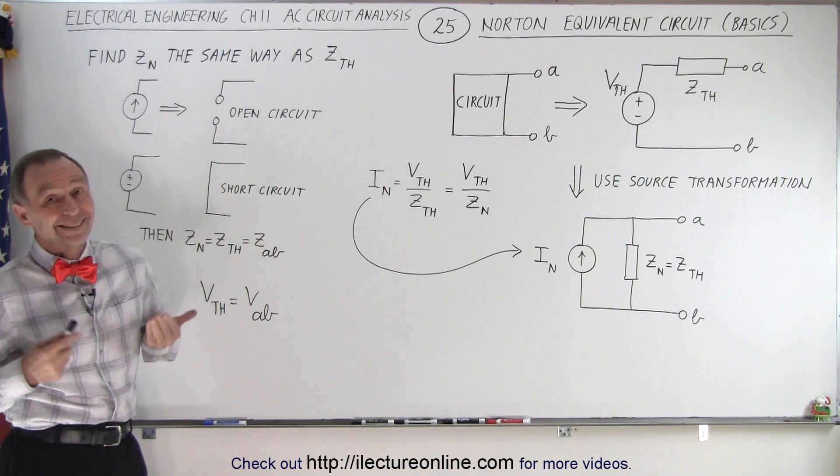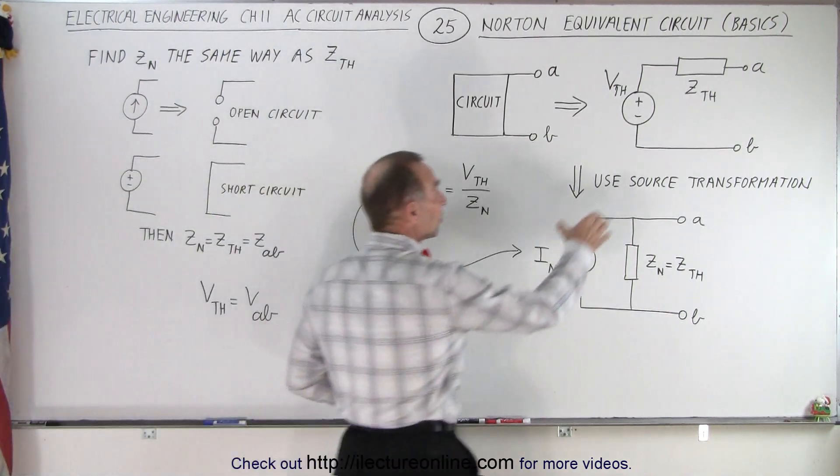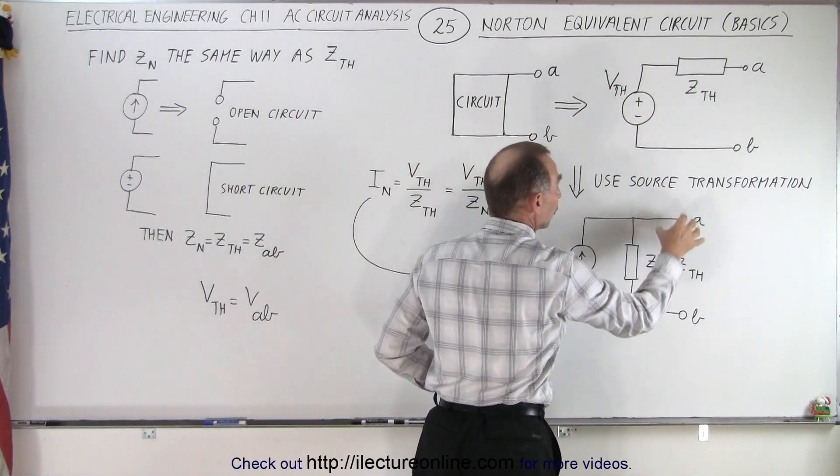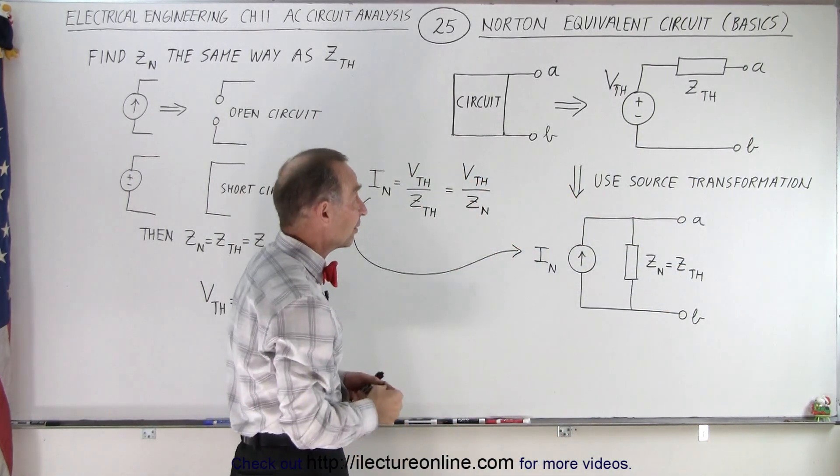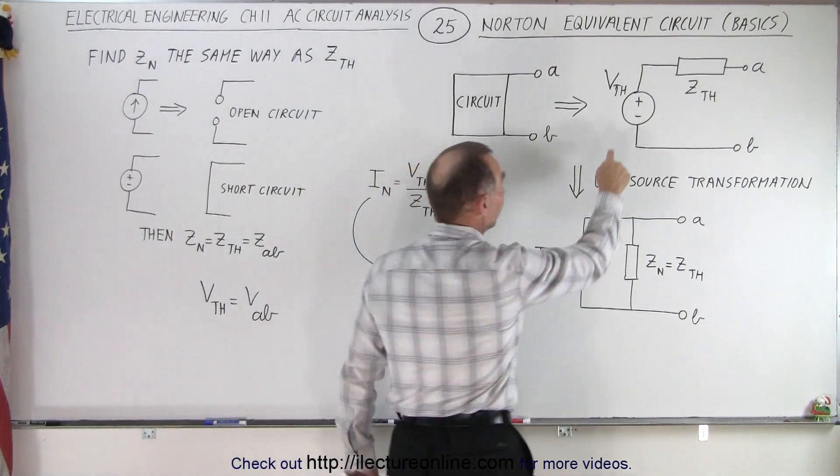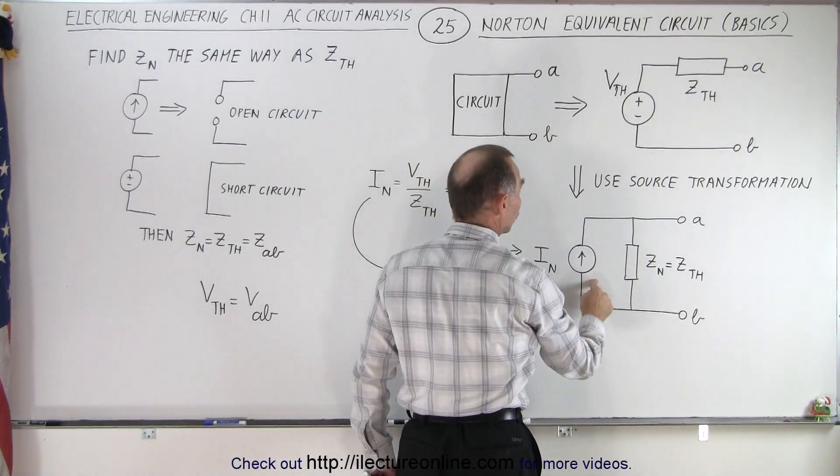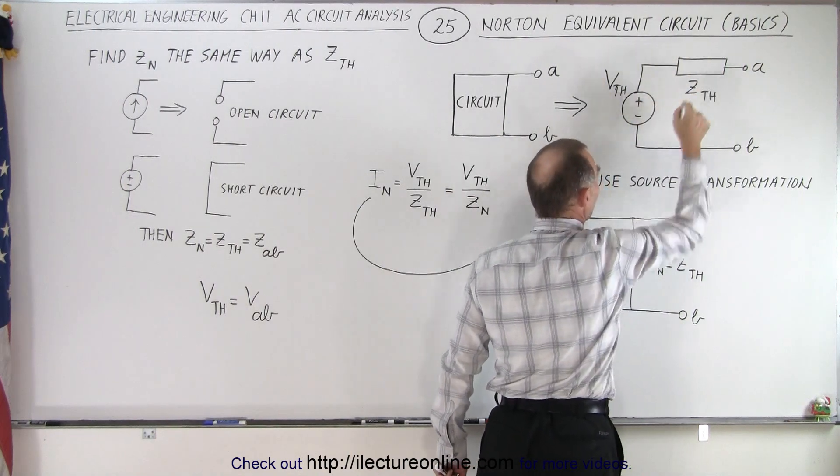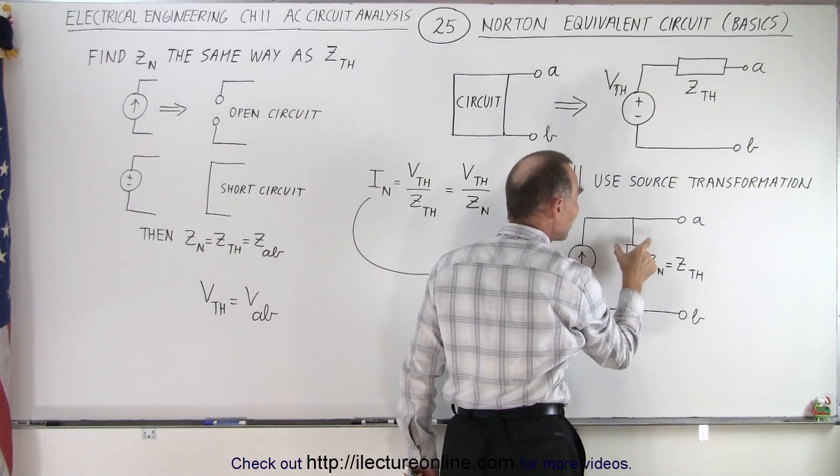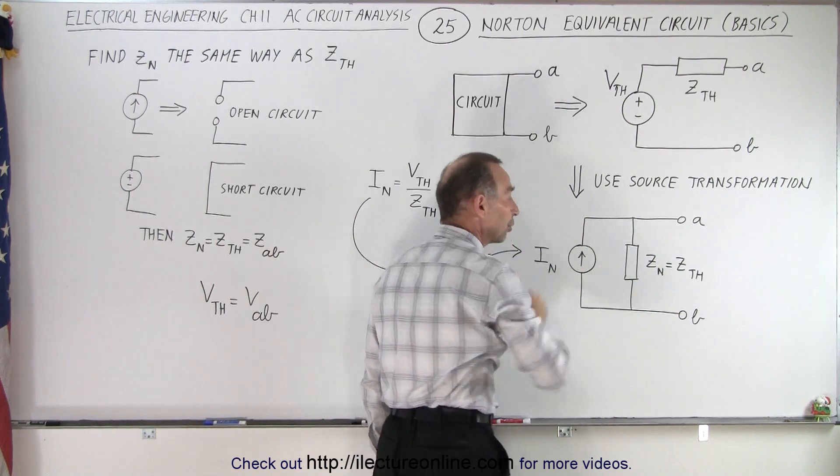But as you can see, once you've found the Thevenin equivalent circuit, to find the Norton equivalent circuit, we simply do a source transformation in the exact same way as we've done before. Notice we turn the voltage source into a current source, and we take the impedance which is in series with the voltage source and turn it into the very same impedance, but in parallel with the current source.